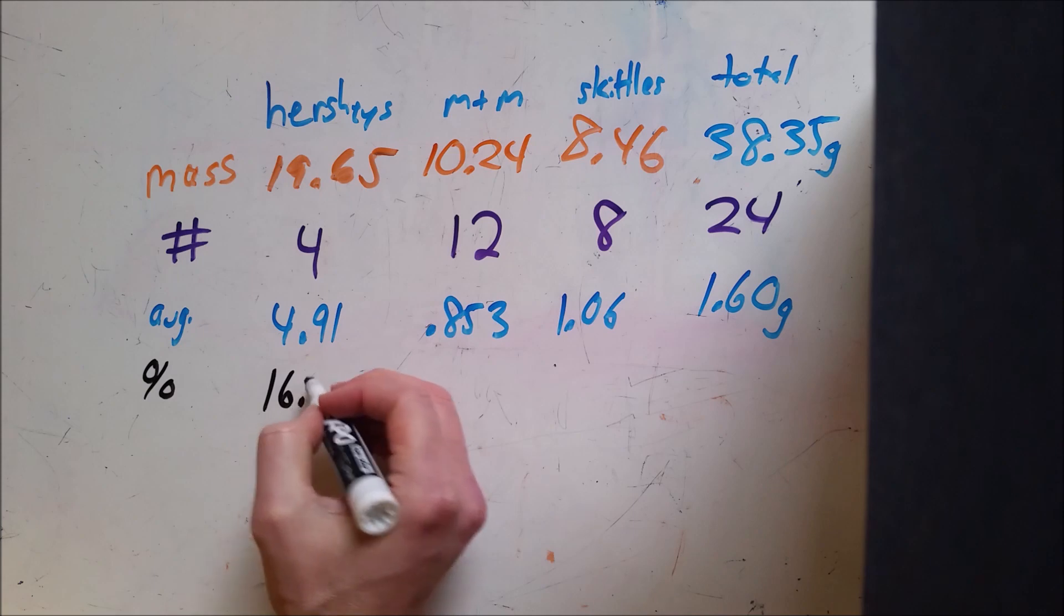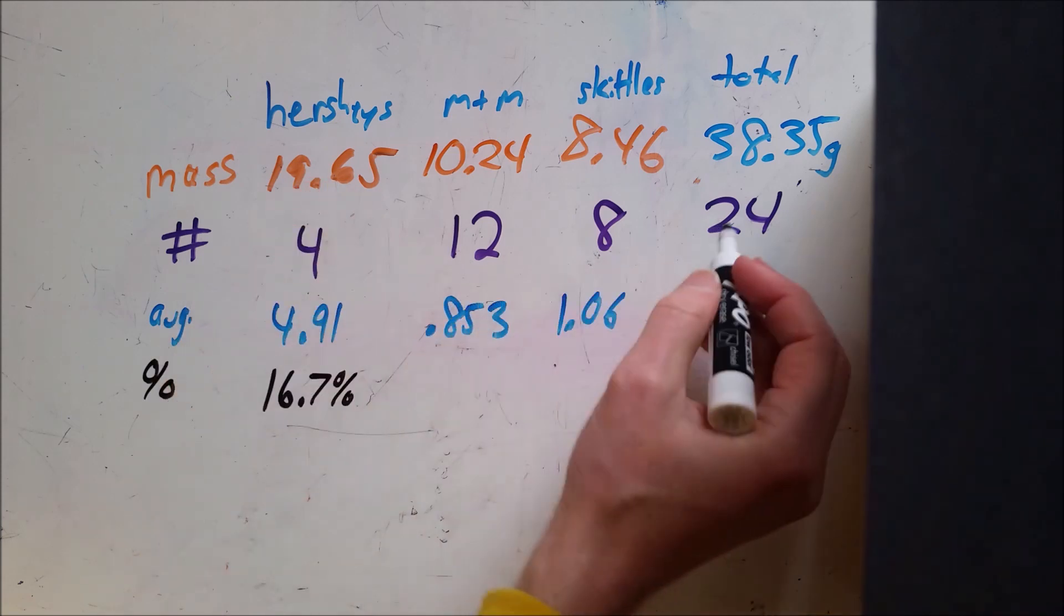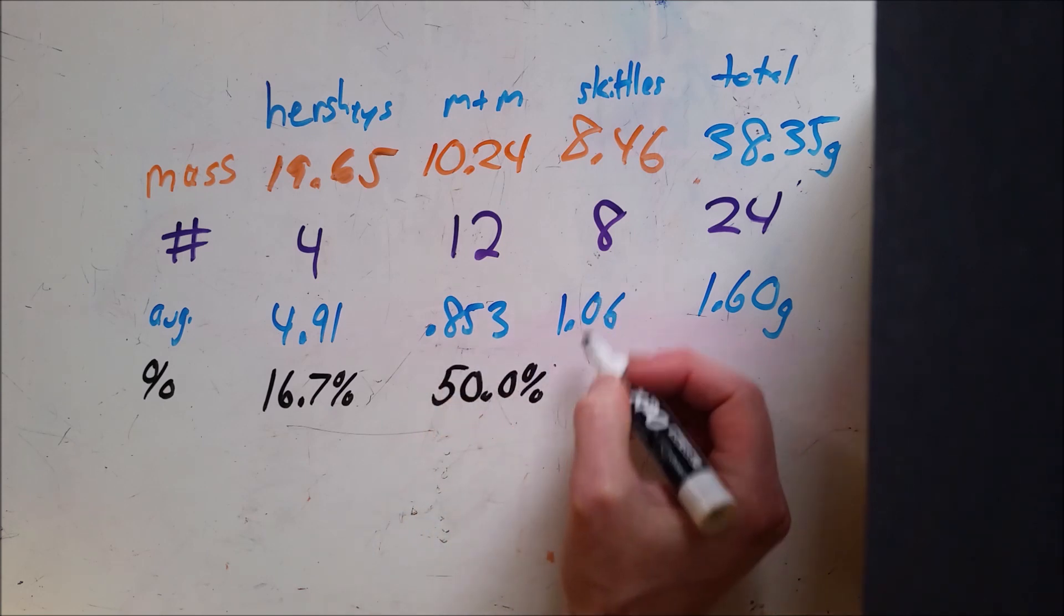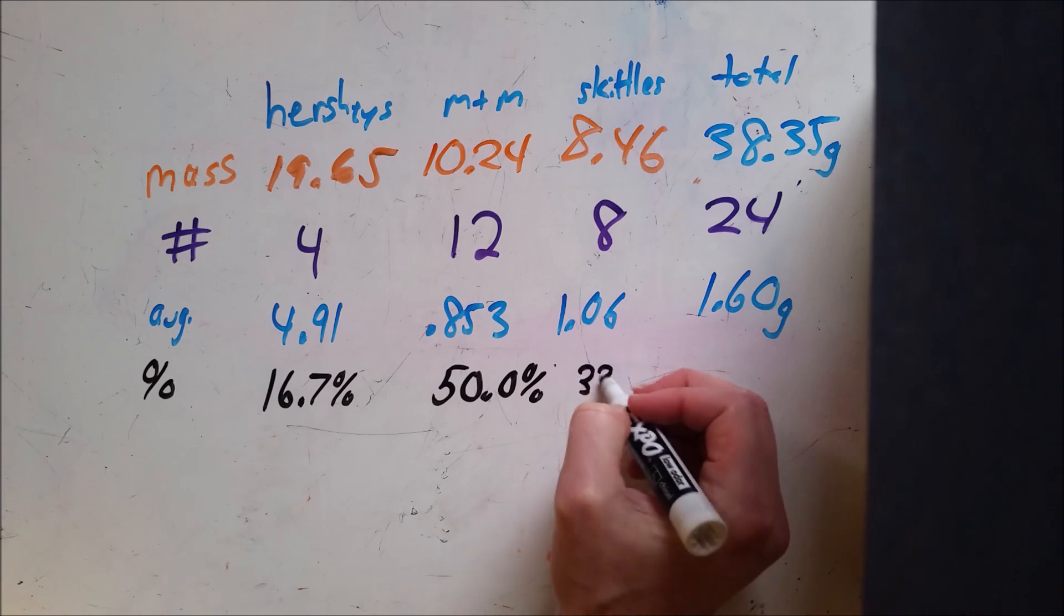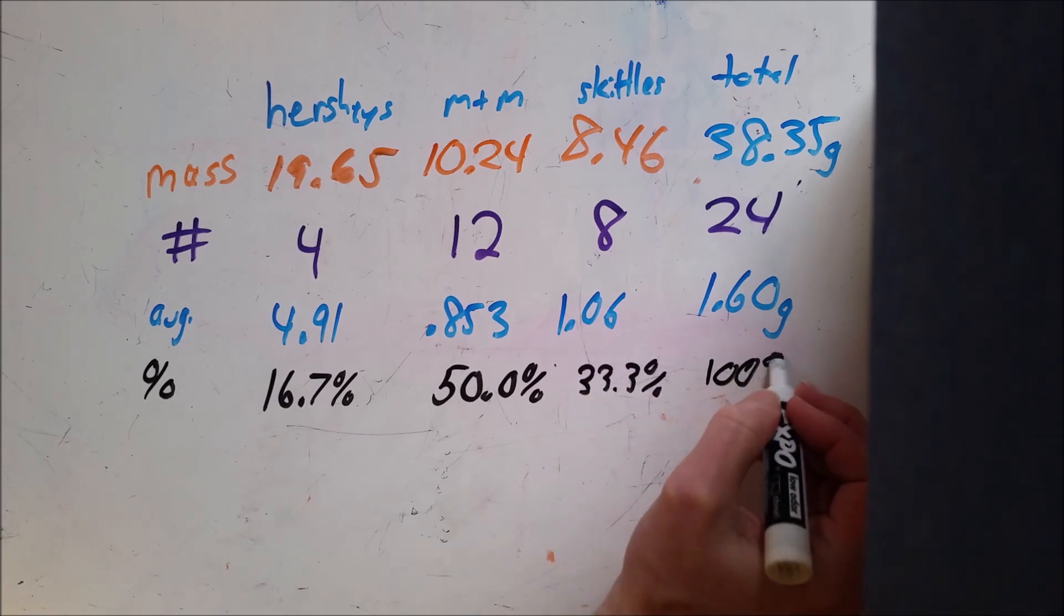So I have 16.7% of my candy pieces were Hershey's. I have 12 out of 24, or 50%, were M&Ms. And the remainder, which is 1/3, 33.3%, were Skittles. So that totals up to be 100%.